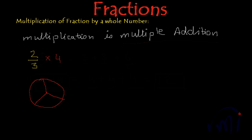And 2 by 3 means we have to take 2 parts out of these 3 parts. So this was first part and this is the second part. And this is called 2 by 3. So this is the pictorial representation of 2 by 3.